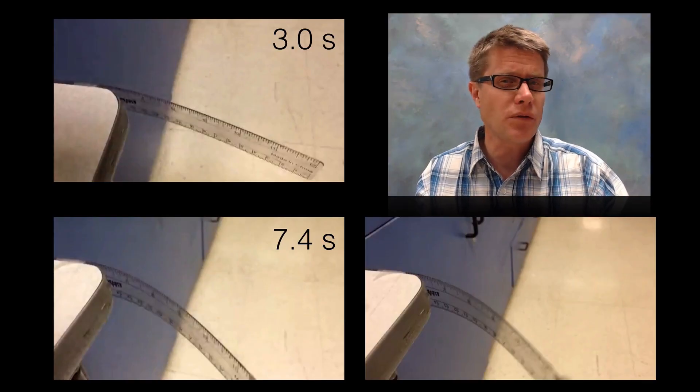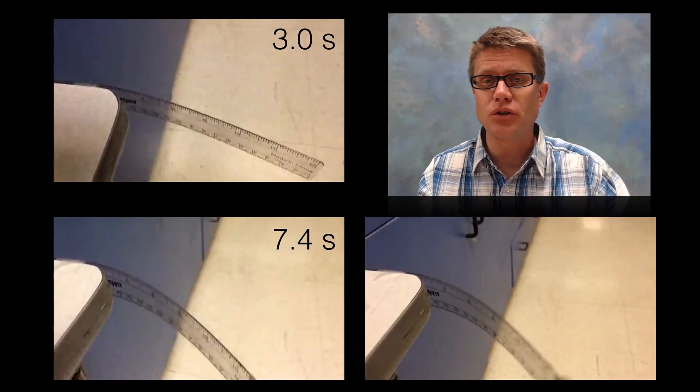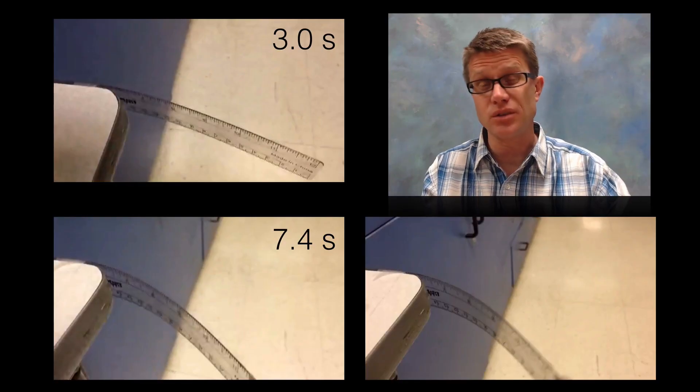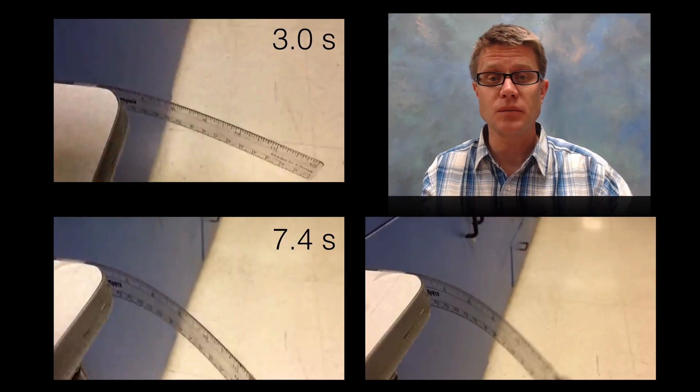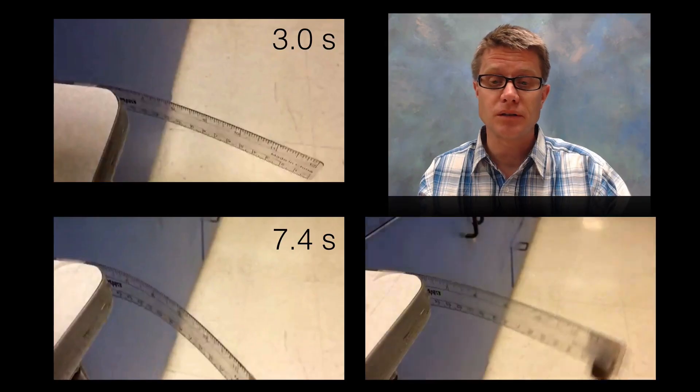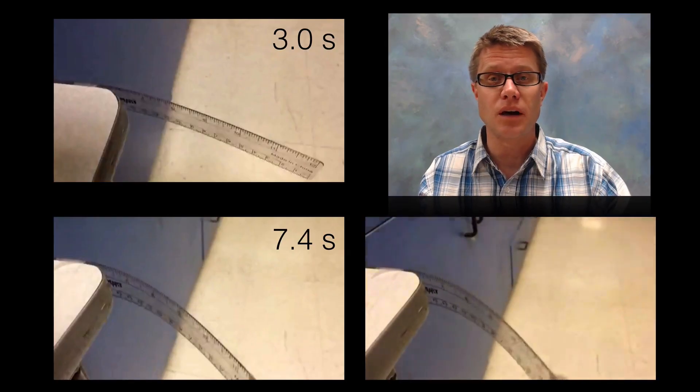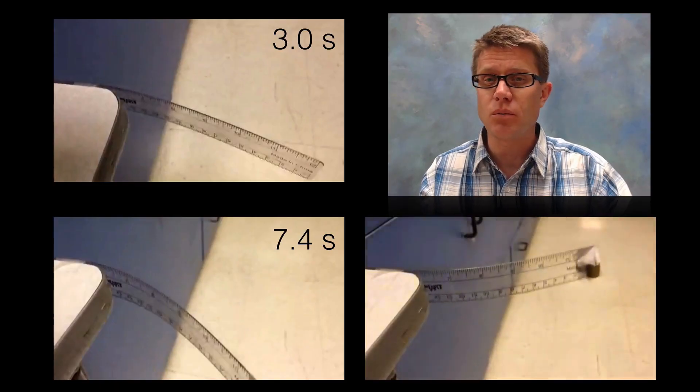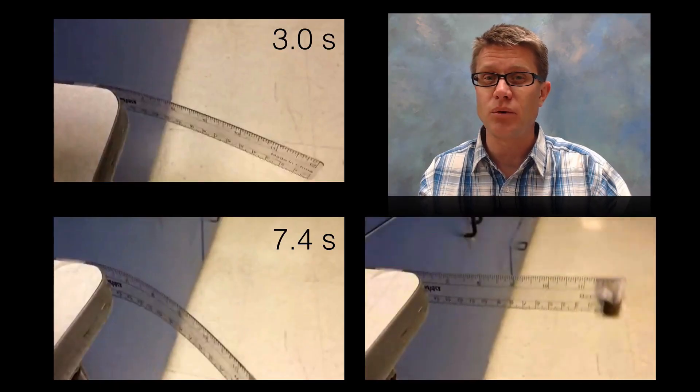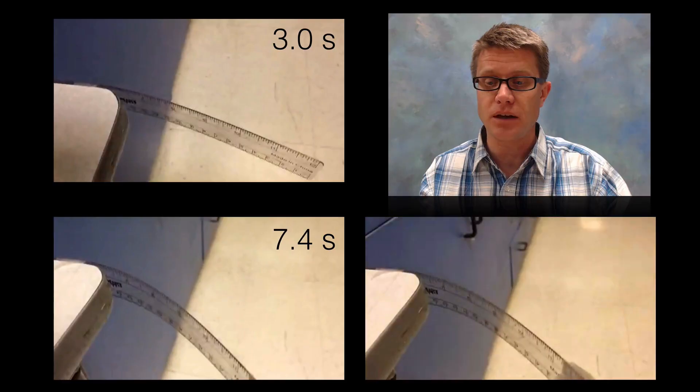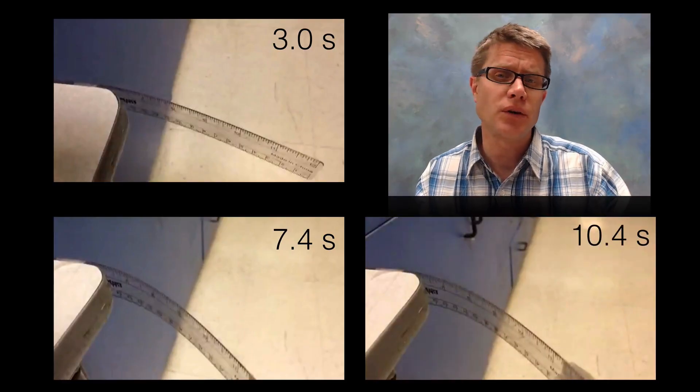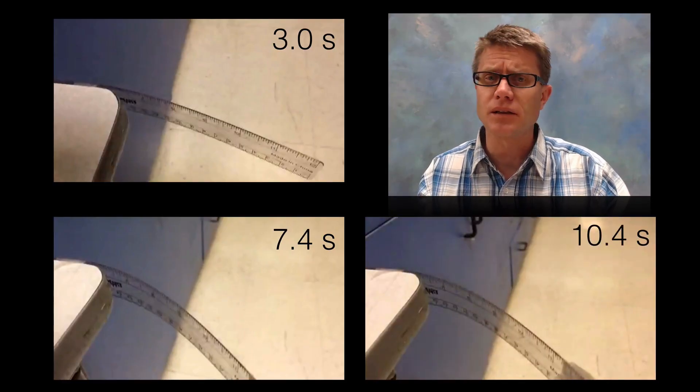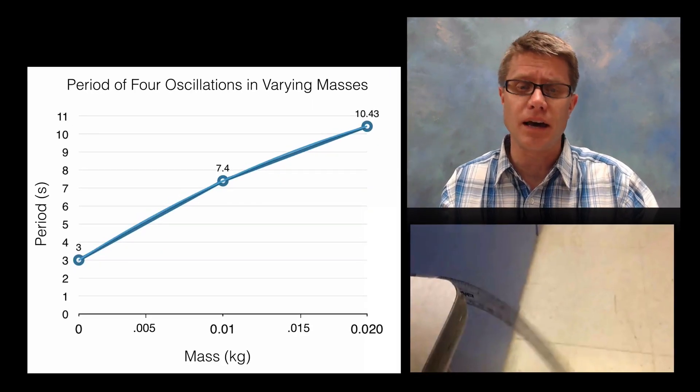What do you think the next one's going to be? I put 20 grams on the weight. So I started with 0, then 10 grams and then 20 grams. You might be thinking it's going to be slower for sure. What's the number going to be? Well if it's linear we would see an increase of 4.4 seconds, so it would be around 11.8 seconds. Let's see what the time is. It's 10.4 seconds. So it doesn't look like it's linear.